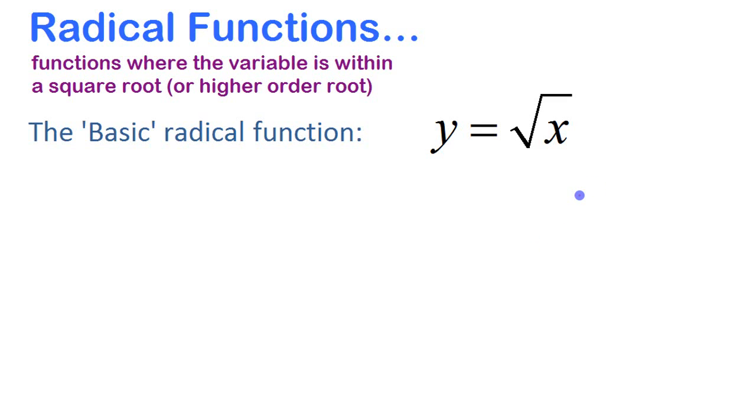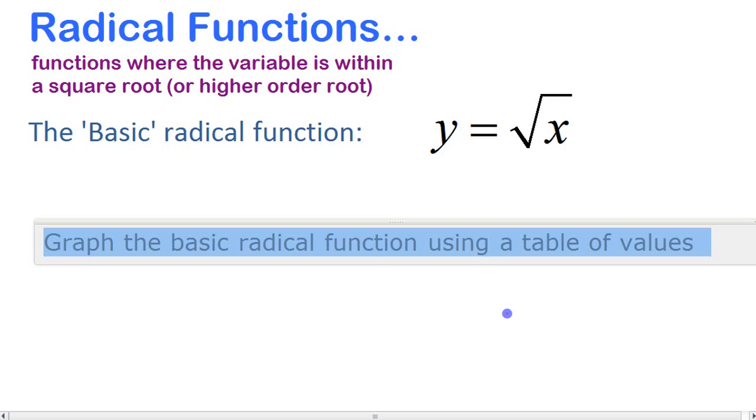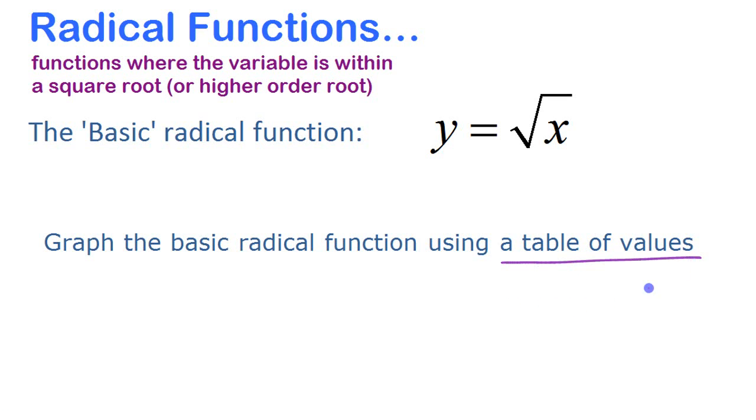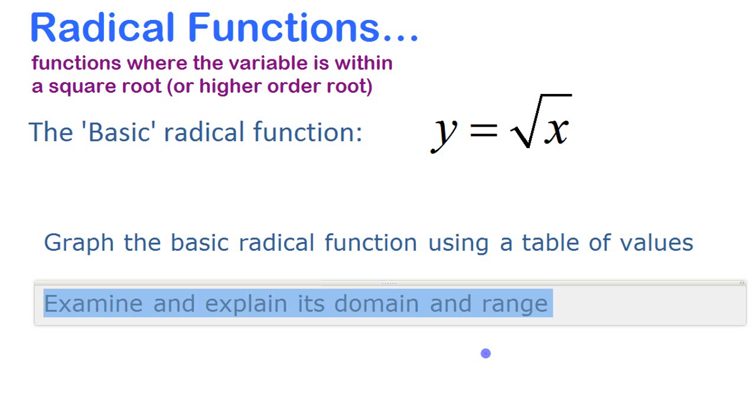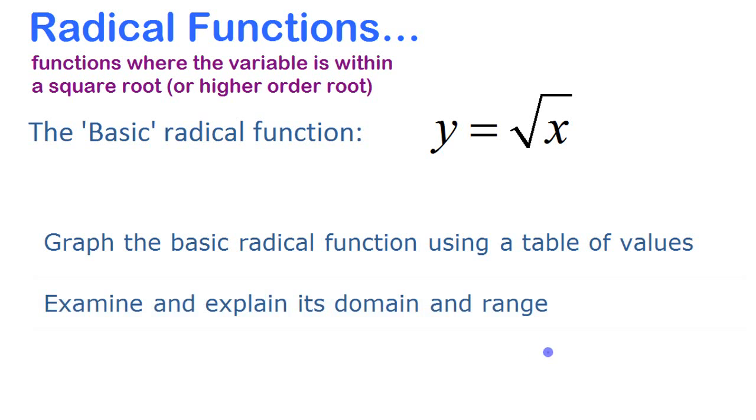And when we're looking at this, we're going to look first at just what the graph is, and we're going to graph it using a table of values to start with, and then we're going to look for what patterns are involved, and then we can do it more quickly after that. And then we're also going to look at what the domain and the range are, and try and explain why they are what they are.